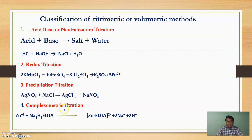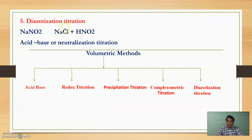The fourth method is Complexometric Titration, where metal ions form a complex with chelating agents like Ethylene Diamine Tetra Acetic Acid (EDTA) to give a Zinc-EDTA complex. The last type is Diazotization Titration, where a reaction like NaNO2 plus acid gives a diazotization product, HNO2.